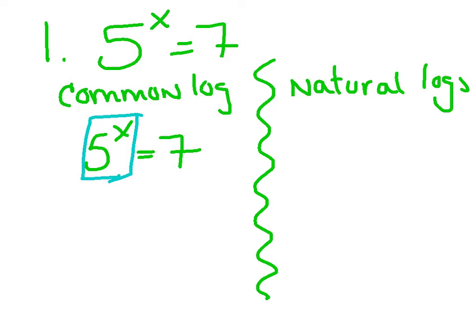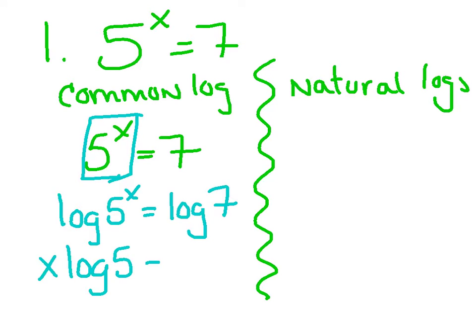Step two, take the common log or natural log of both sides. Well, I'm going to start with the common log. So I'm going to simply write down log in front of this side and balance your equation, log in front of this side. Now, remember, you have to apply one of the properties. Take this exponent and bring it down in front. So I'm going to get x log 5 equals log 7.